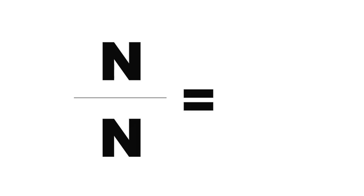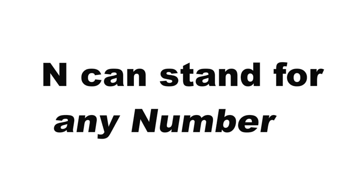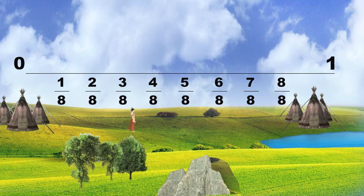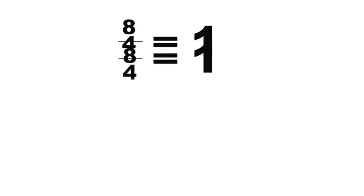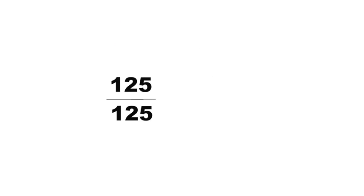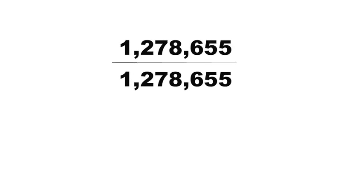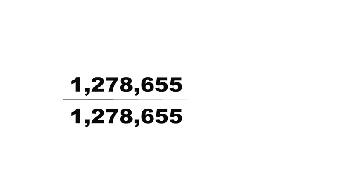N over N equals 1. N can stand for any number, and this is true for any fraction. When you have traveled 8 eighths of the way, you've made one whole trip. 8 over 8 equals 1, but 4 over 4 also equals 1. 125 over 125 equals 1. And 1,278,655 over 1,278,655 also equals 1.